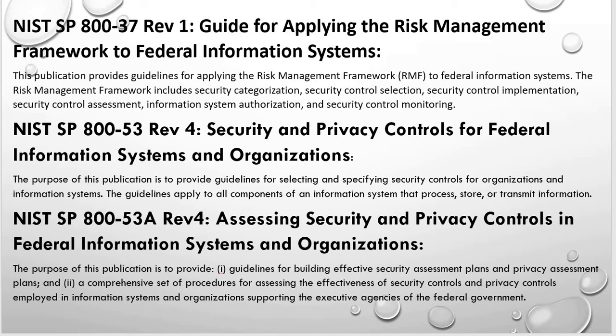NIST SP 800-53A Revision 4 is called Assessing Security and Privacy Controls in the Federal Information Systems and Organizations. This publication guides you on how to assess each security control — what you should be looking for during assessment. It also covers the three assessment methods: examining, interviewing, and testing, and what you should look for under each method.